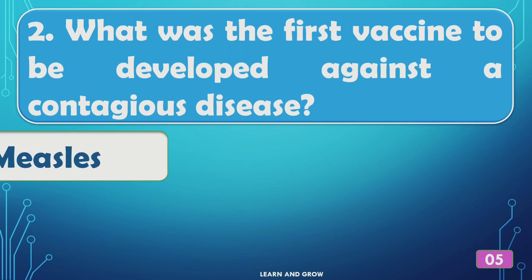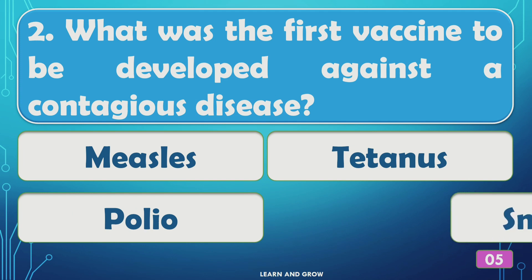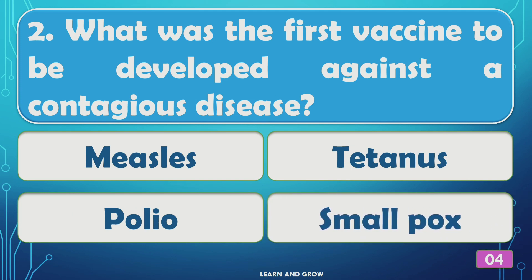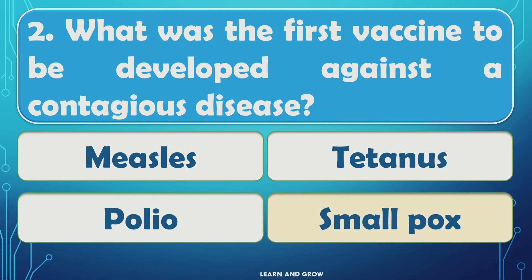What was the first vaccine to be developed against a contagious disease? The right answer is option D, smallpox.